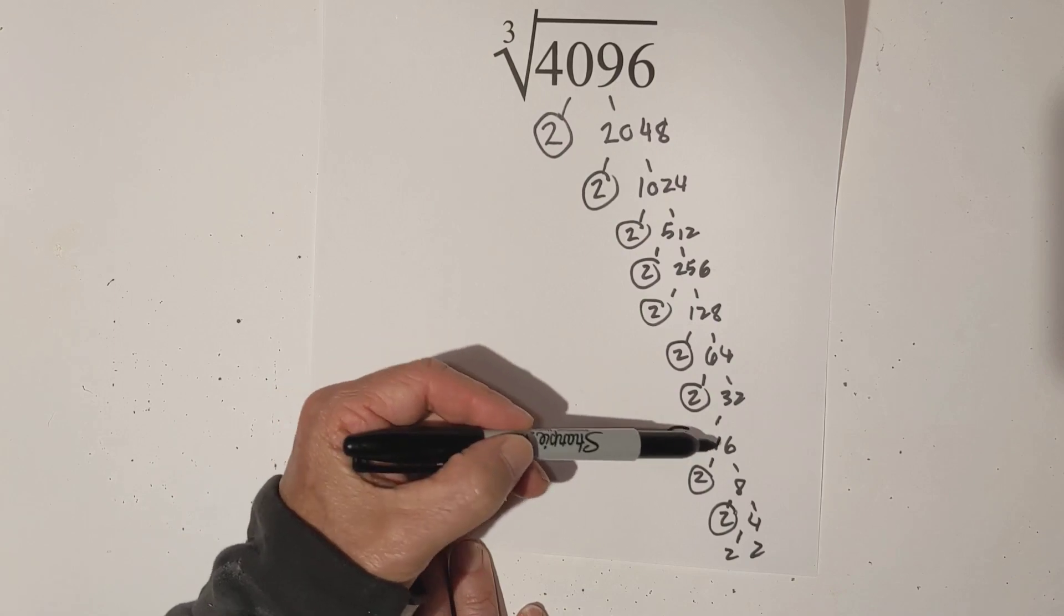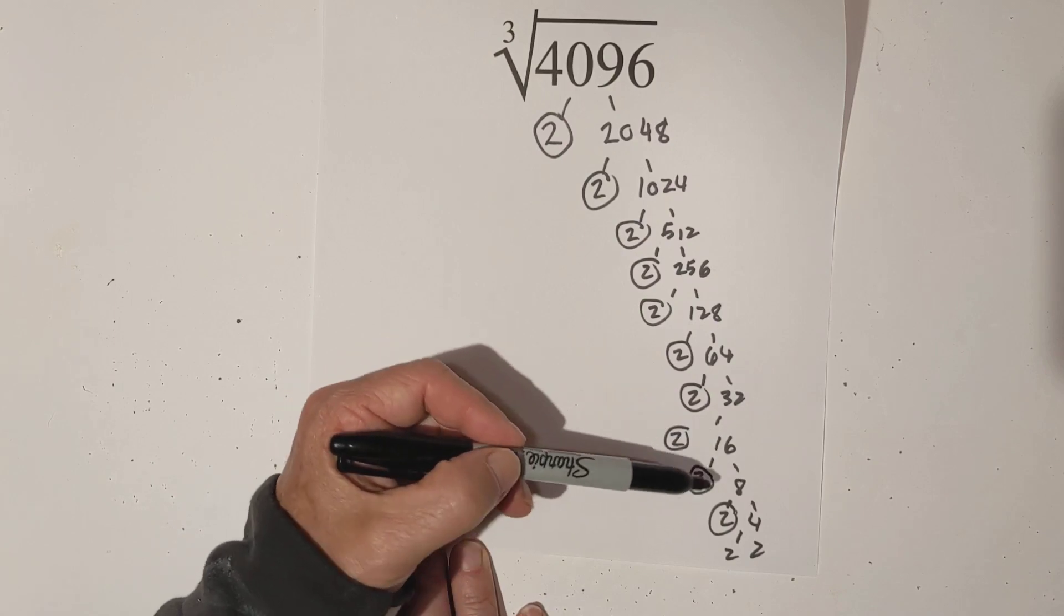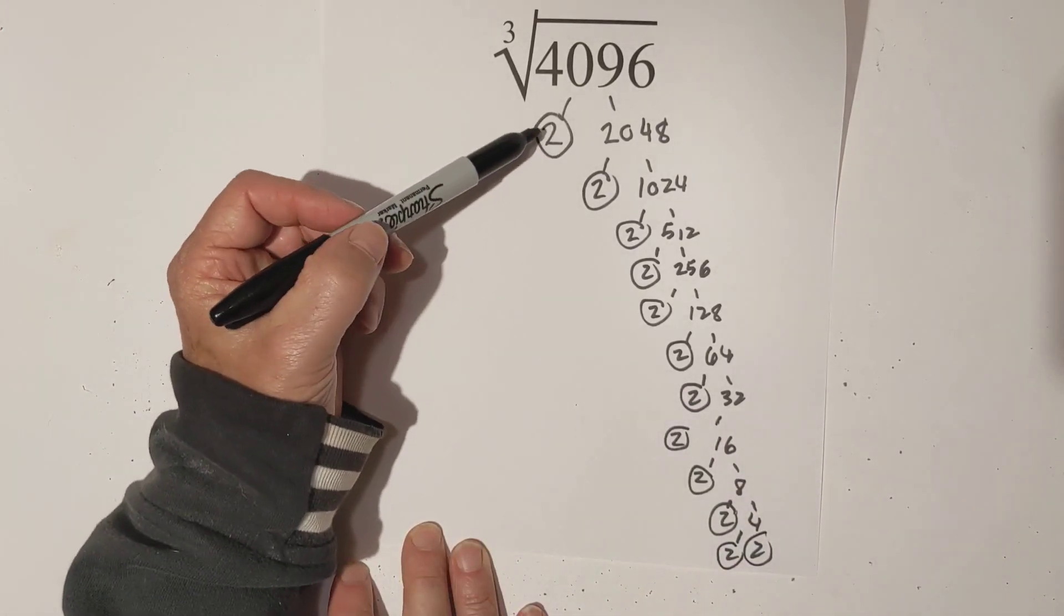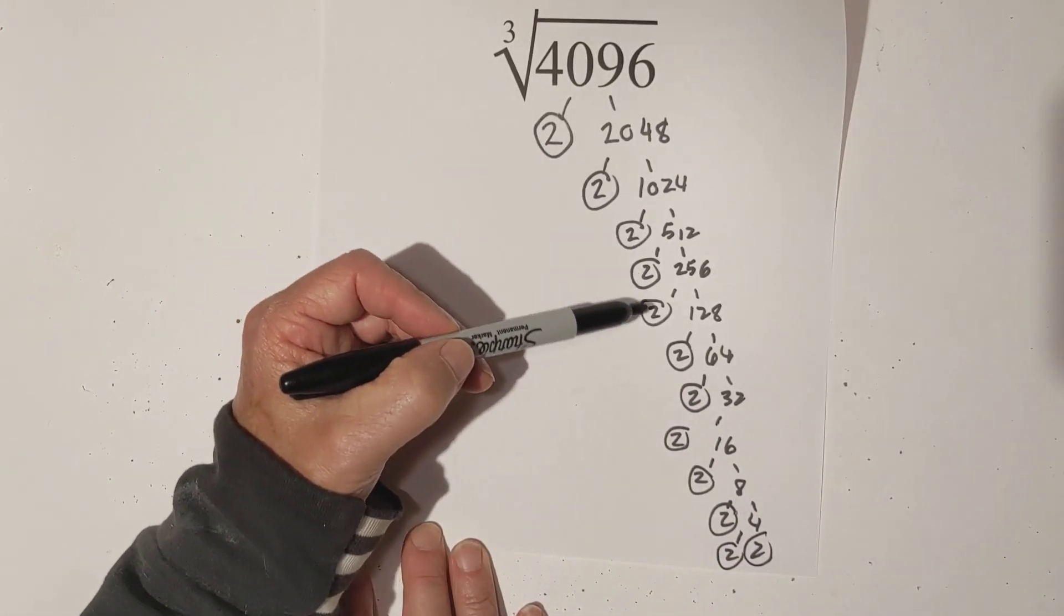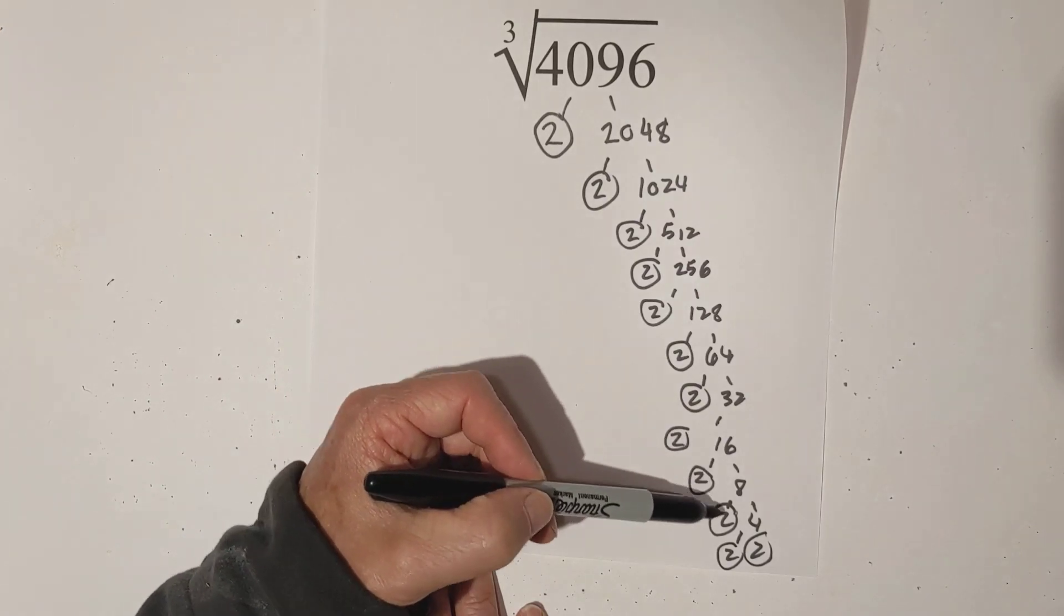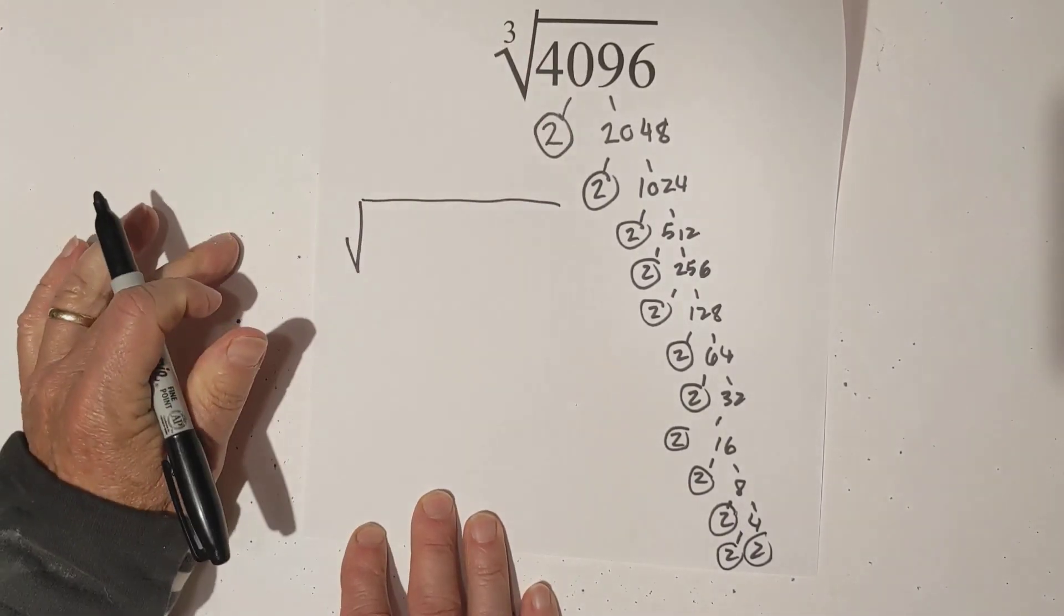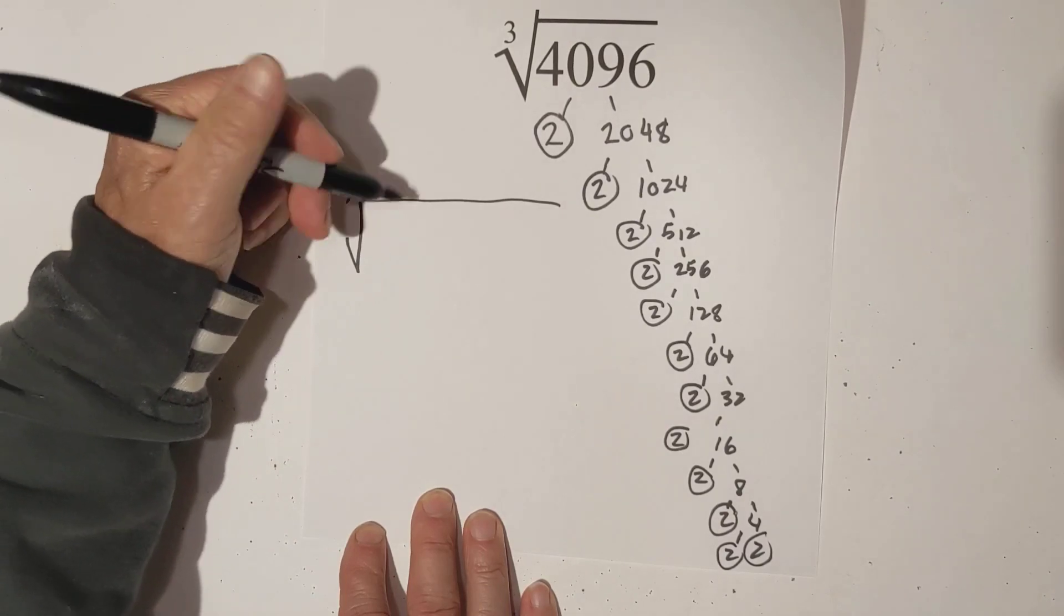If you missed it down at the very end, 2 times 16, and then 2 times 8, 2 times 4, and then 2 times 2. So let me count how many twos I have. 1, 2, 3, 4, 5, 6, 7, 8, 9, 10, 11, 12. Remember, you can place it under the cube root symbol. So I've got 12 of these.